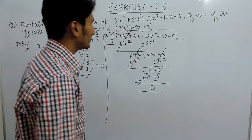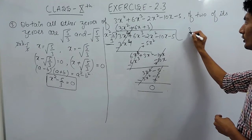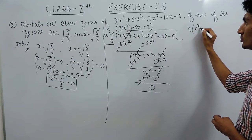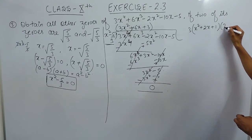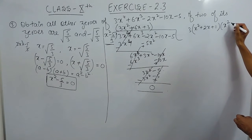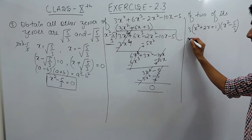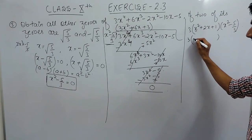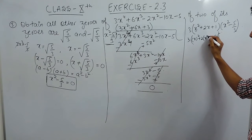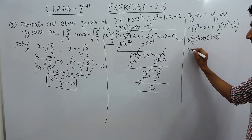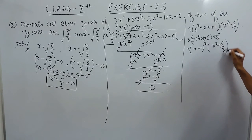Now we need to factorize the remaining quotient. Taking 3 as common gives 3(x² + 2x + 1). This is a perfect square: x² is a², 1 is b², and 2x is 2·a·b. So we have 3(x + 1)² as one factor and (x² - 5/3) as the other factor.